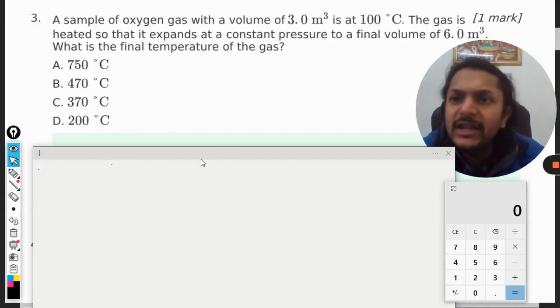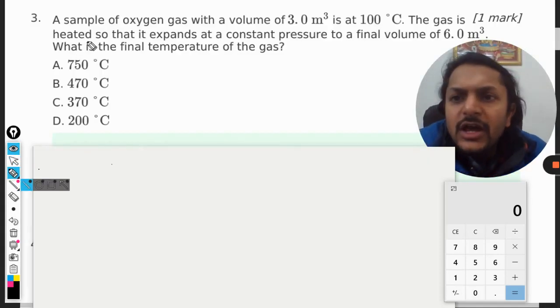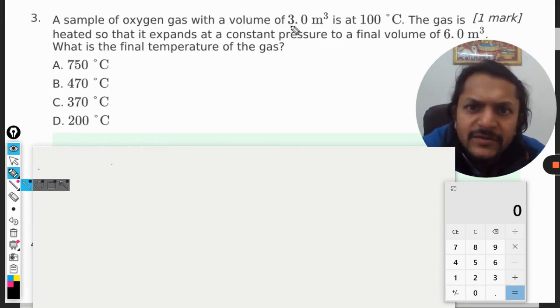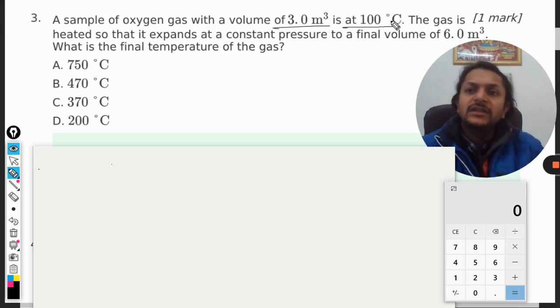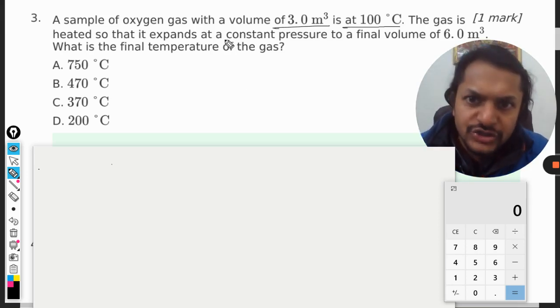Okay dear students, let us see how to do this question. A sample of oxygen gas with a volume of 3.0 m³ is at 100°C. The gas is heated so that it expands at constant pressure.